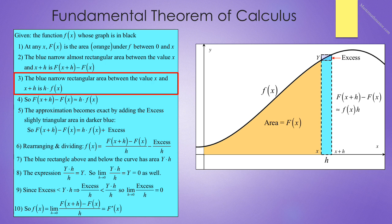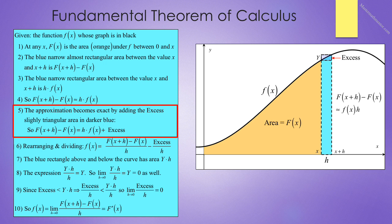Now focus on the blue, narrow, rectangular area between the values of x and x plus h. The area of that rectangle is exactly h times f of x. So capital F of x plus h minus capital F of x is approximately equal to h times f of x. Our approximation becomes exact by adding on the excess, which is the slightly triangular area in darker blue. So capital F of x plus h minus capital F of x is equal to h times f of x plus the excess.